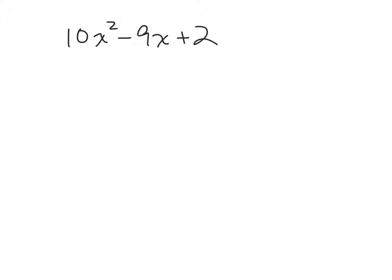So let's ask ourselves if there is a common factor, and on this problem there is not. So the reason that we know to do the AC method is because it has three terms. So we're going to leave the 10x squared alone. We're going to leave the plus 2 alone. We're going to end up rewriting that negative 9. And to do that, we'll take the A times the C. In this case, that's 10 times 2, which is 20.